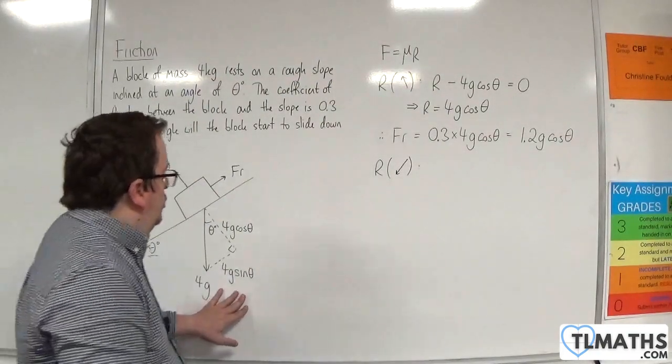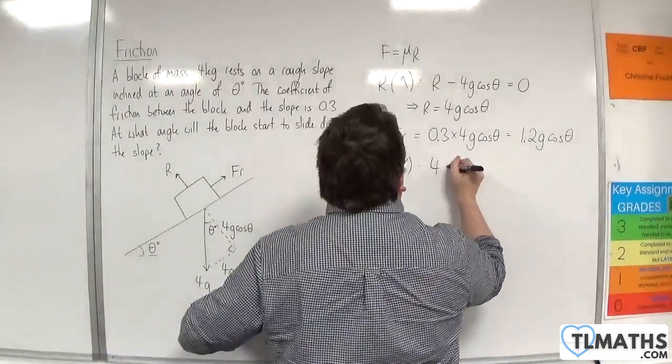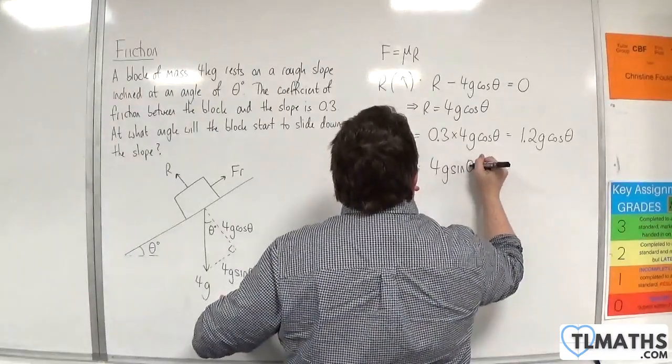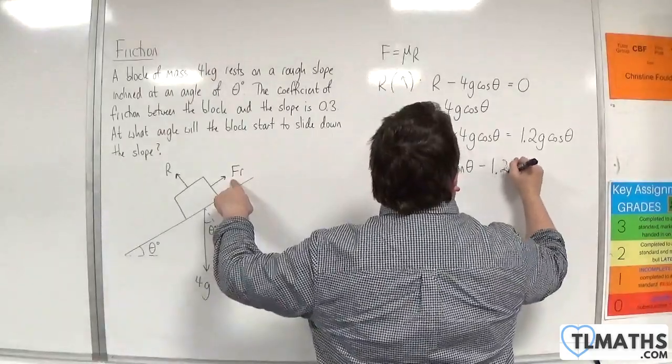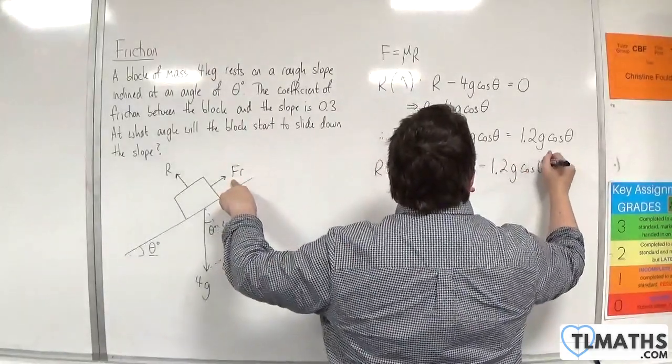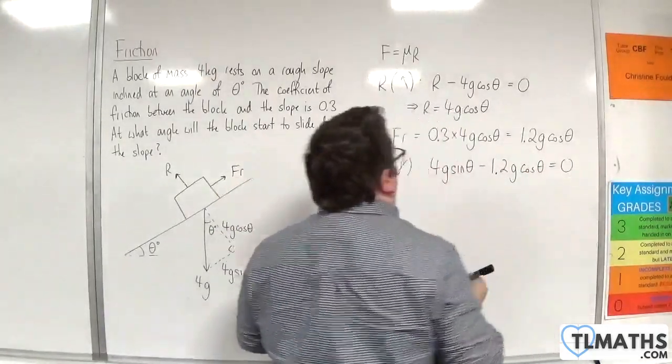So that would be 4g sine theta take away the friction, which is 1.2g cosine theta, must be equal to 0.